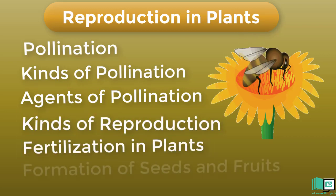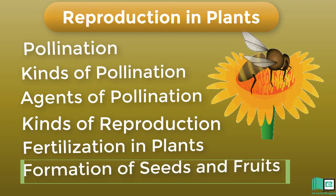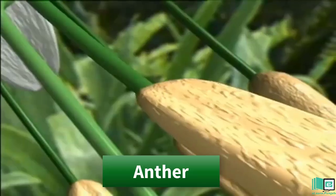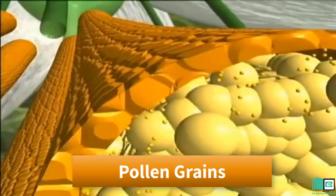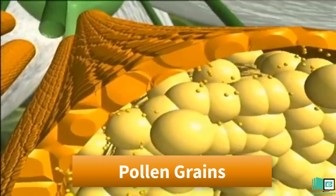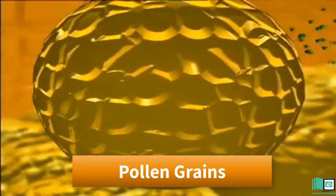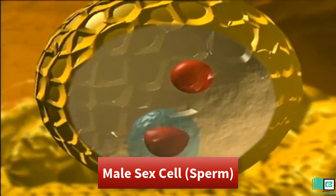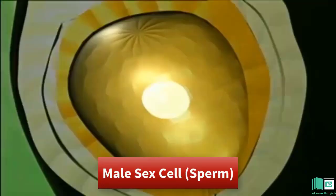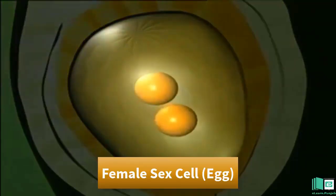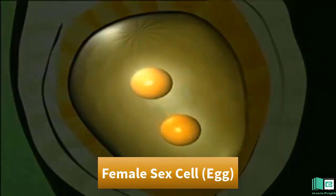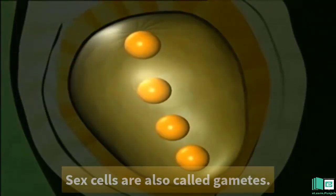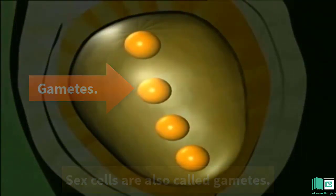Formation of Seeds and Fruits. Pollination: The transfer of pollen grains from the anther of a flower to the stigma of the carpel is called pollination. With the help of this process, the male sex cell, sperm, reaches the female sex cell, egg. Sex cells are also called gametes.